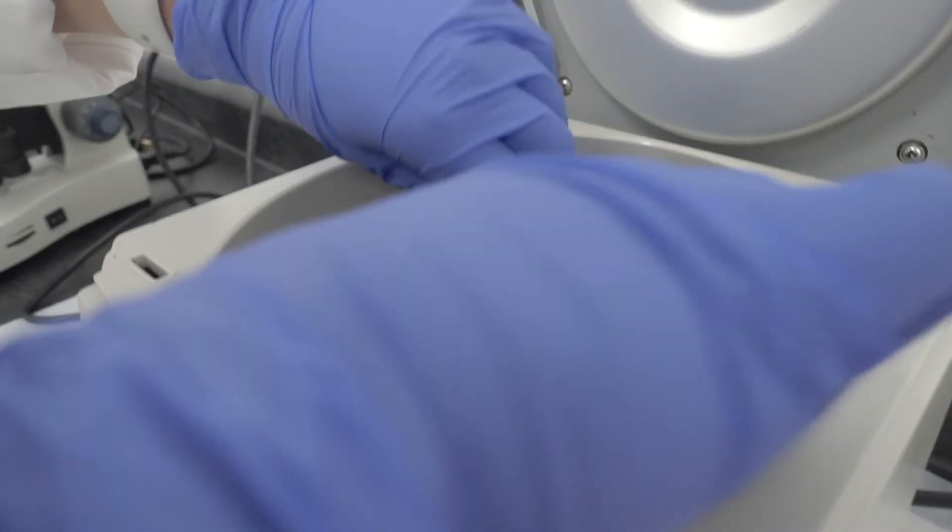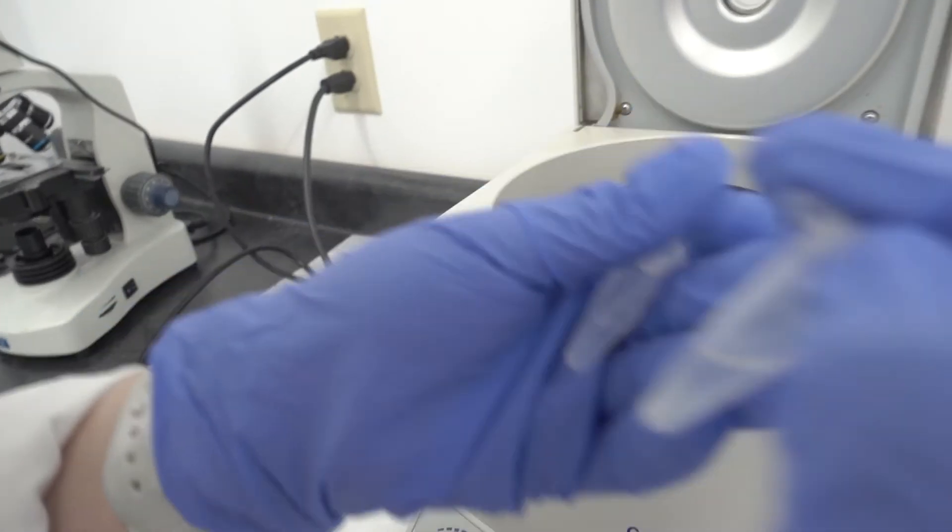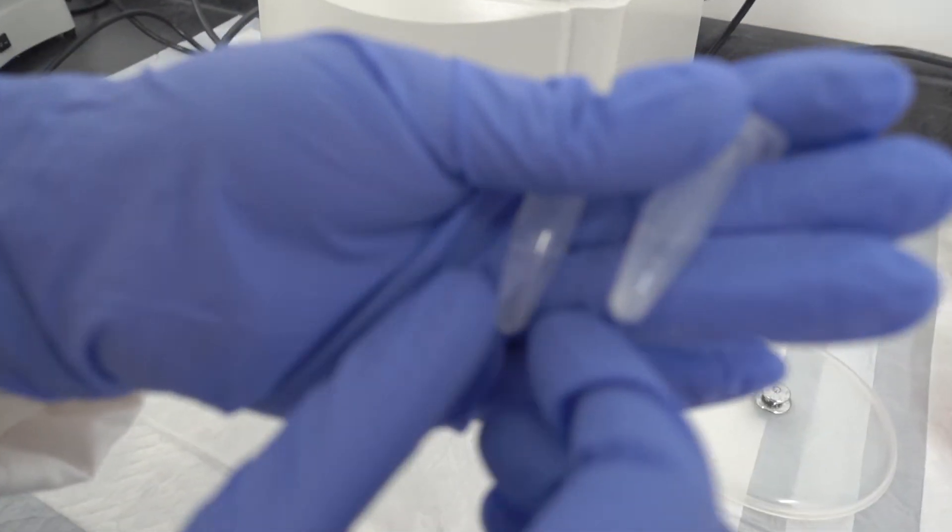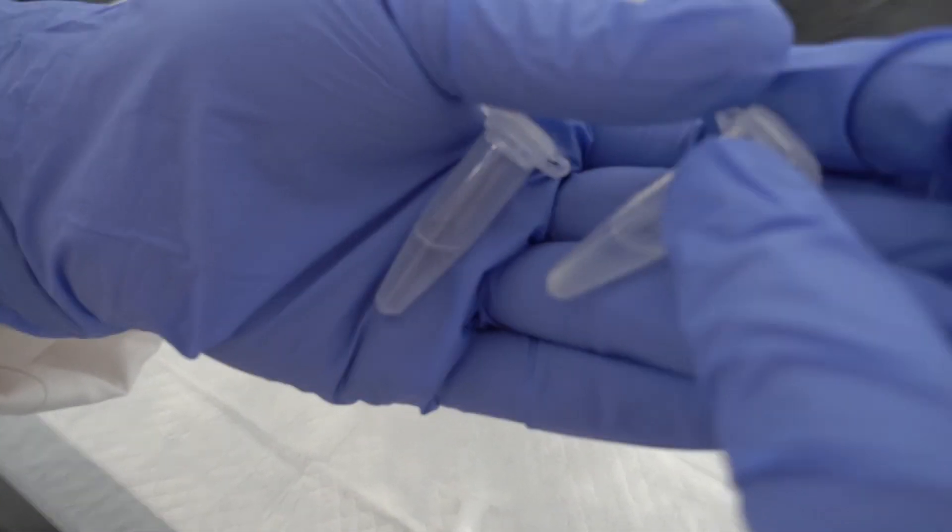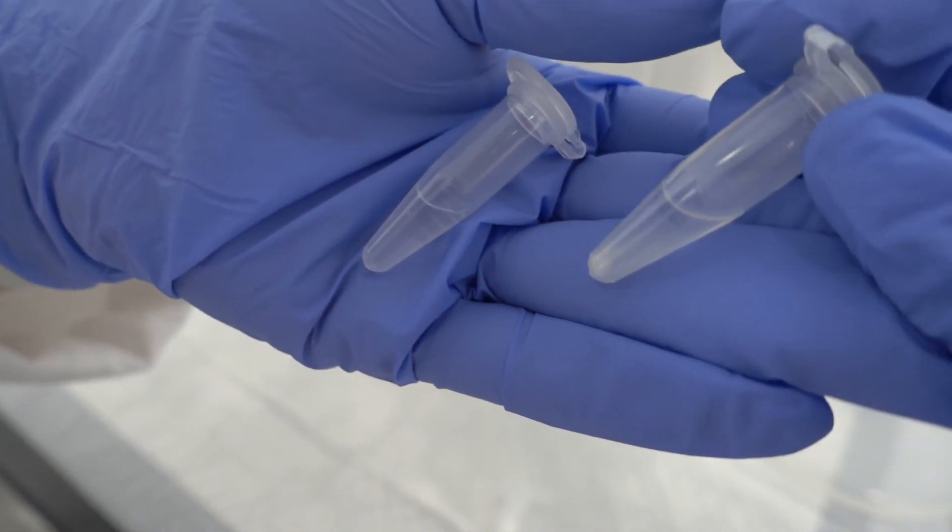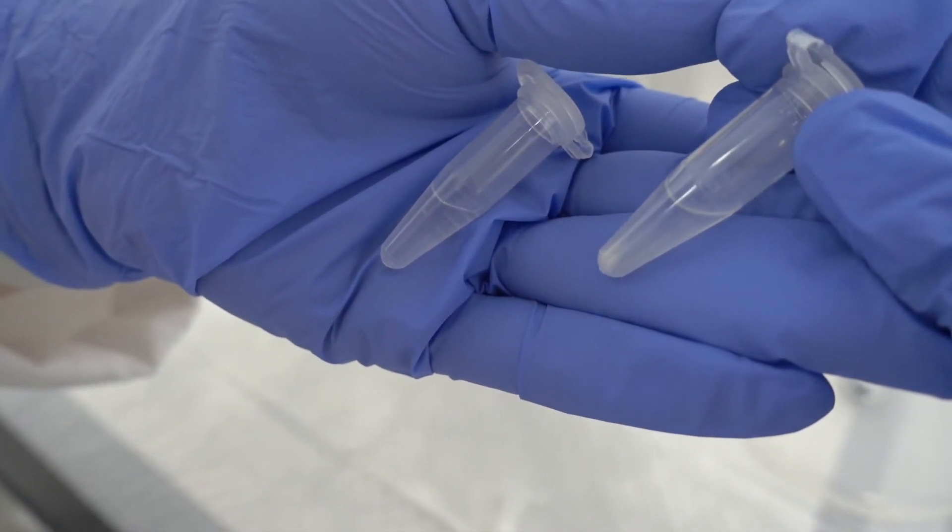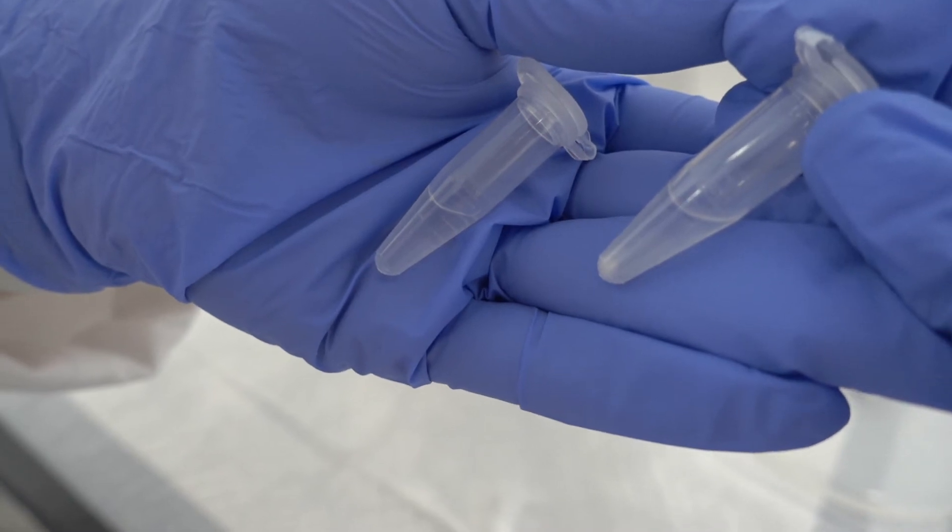Now we've centrifuged the samples and you can clearly see that the MINUTE sample is completely clear, whereas the RIPA sample has a pellet that's formed, indicating that there has been non-systematic protein loss.